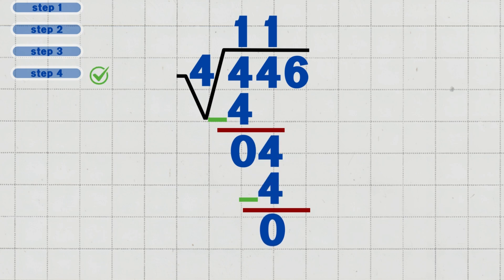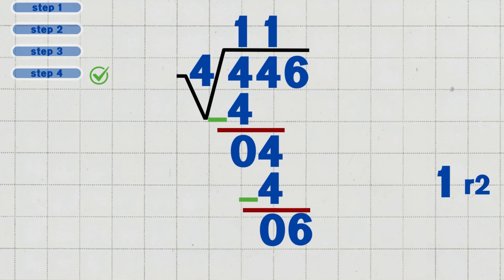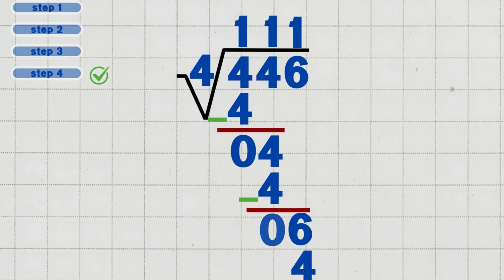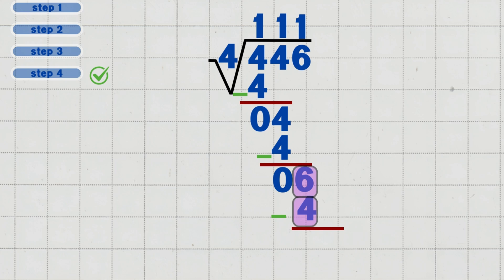Step four: bring down the last digit, six. Bring down the final six from four hundred and forty-six. Now we have six. Six divided by four equals one, with a remainder. Write one above the six in the quotient. Multiply one times four, which equals four. Subtract six minus four, which equals two.